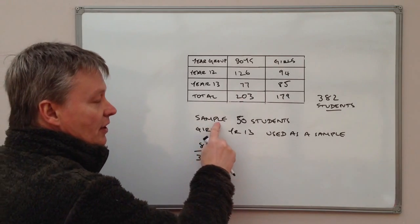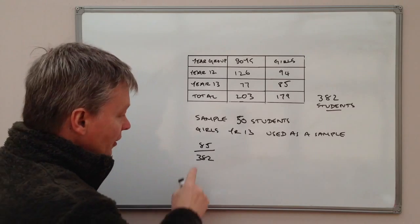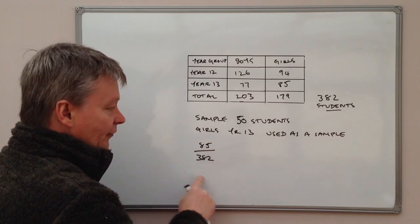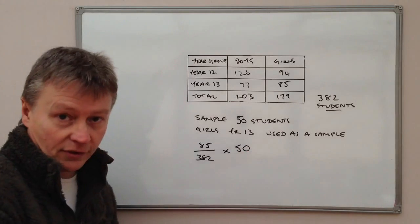However, I've only got resources to sample 50 students. So in other words, it's going to be this fraction, but it's going to be out of 50 students.